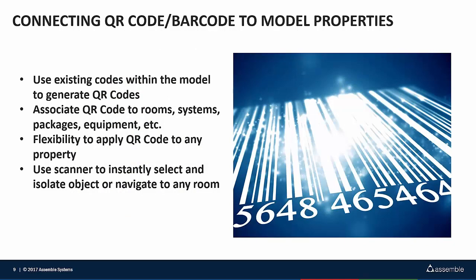With associating barcodes or QR codes, there are a couple of different ways you can do this. You can take an inventory of codes out of the model — there are QR code generators out there where you can create stickers and labels directly from that list of codes. That information could come from your source IDs, instance IDs, system names, system information, or your room names. It makes it really easy to create a list of properties, export that out, load it into a QR code generator, and ultimately print those out.